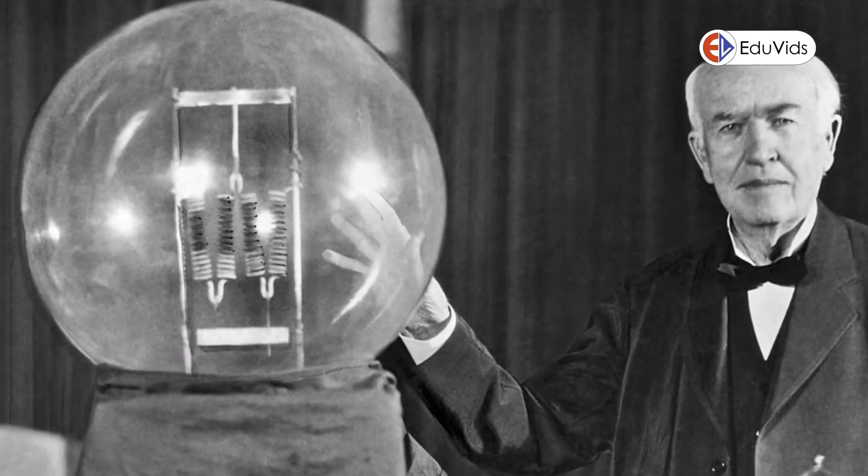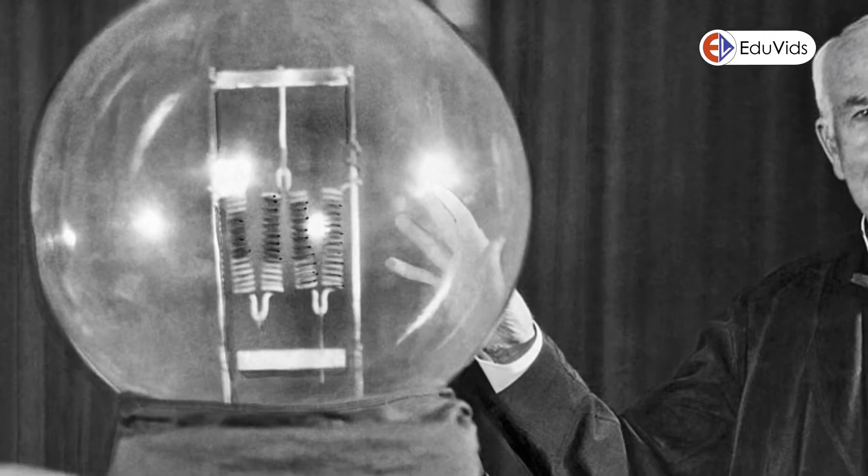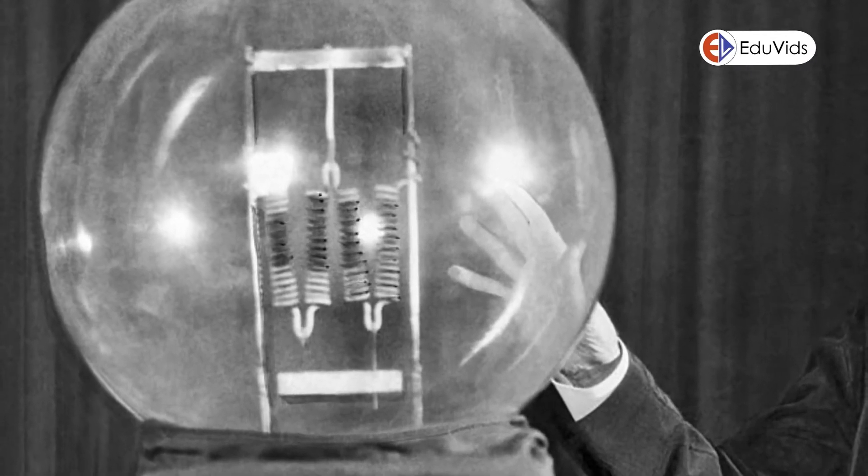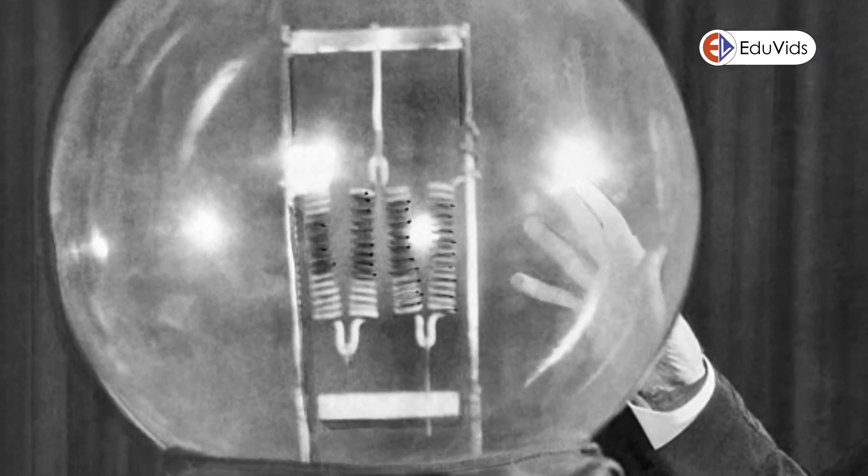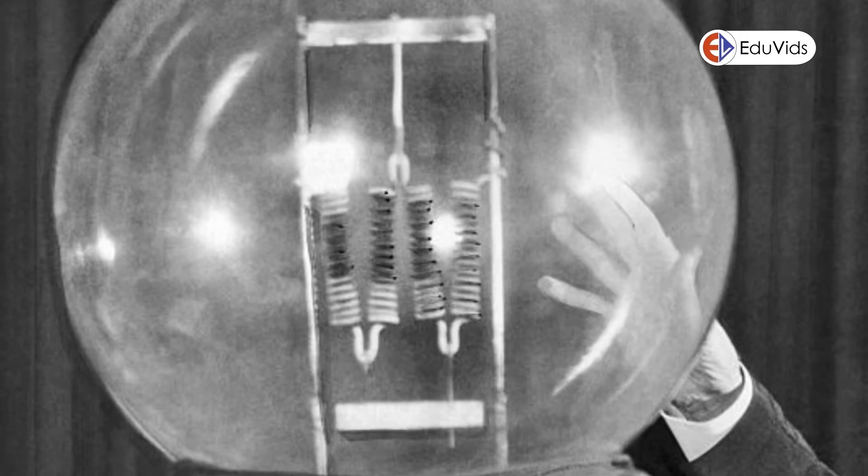While Thomas Edison is widely considered to be the inventor of the incandescent bulb, there are a number of other people who invented components and prototypes of the light bulb well before Edison did.